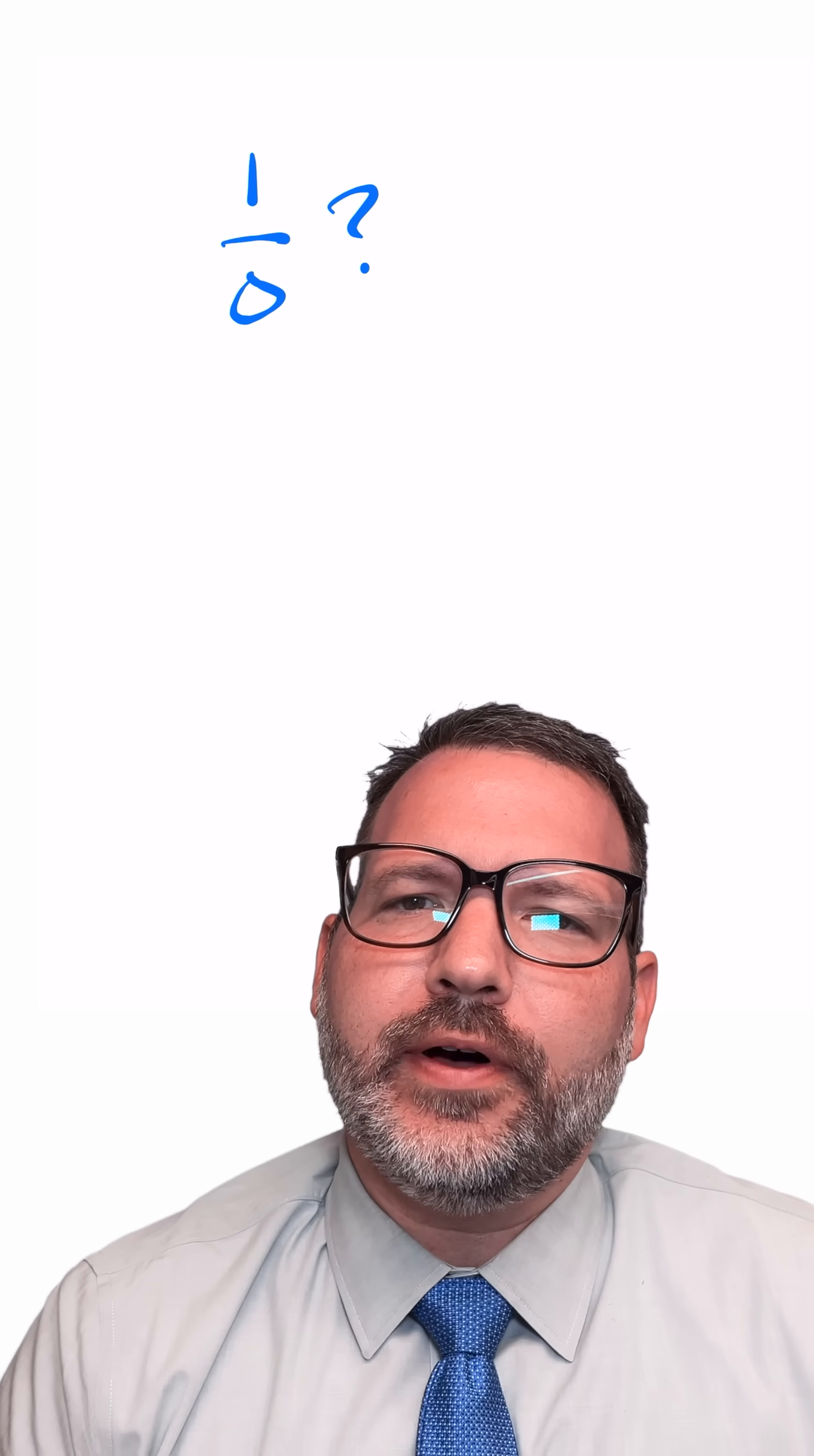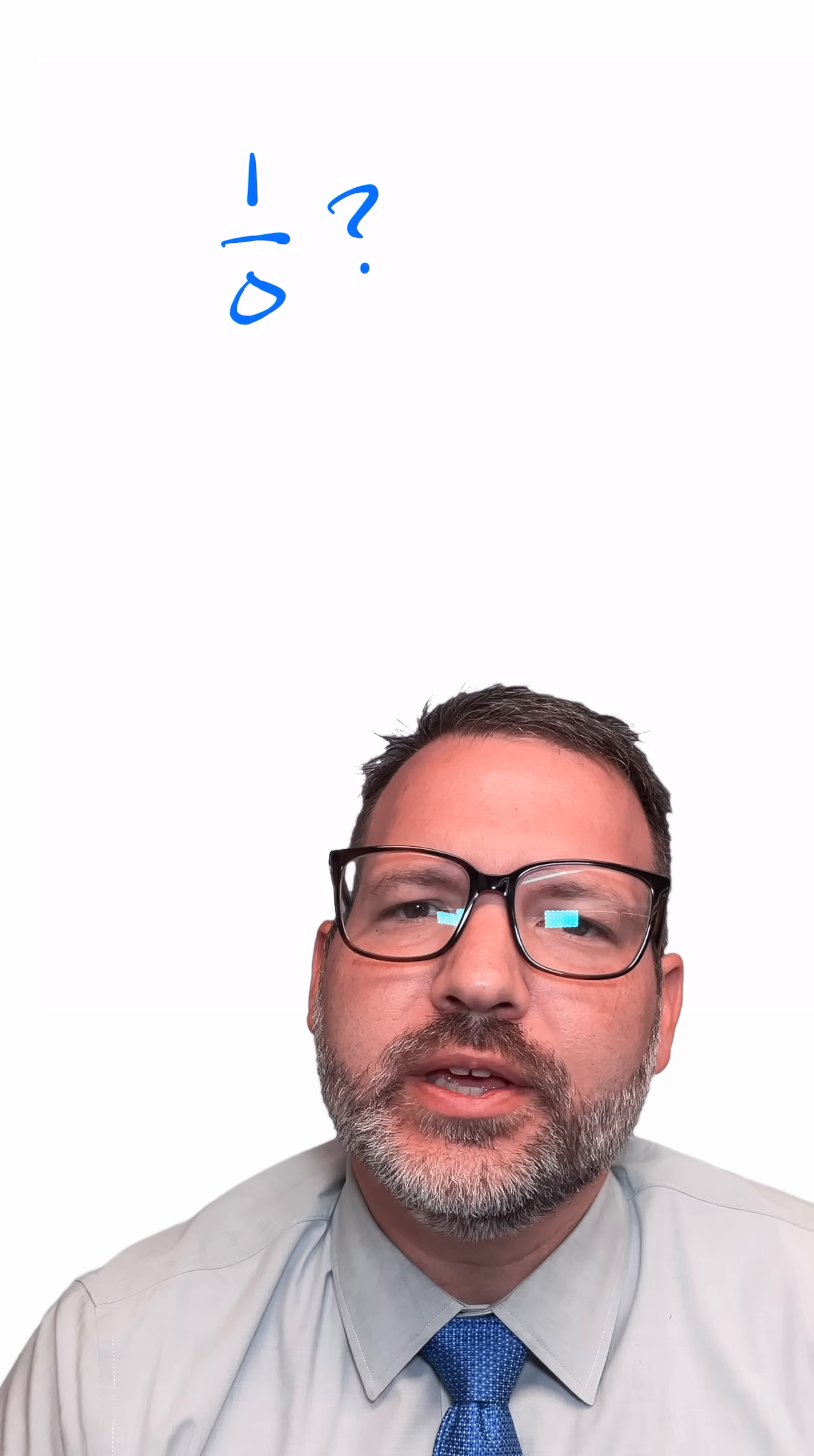What does it mean to divide a number by zero? Take something like 1 divided by zero. How could we assign a value to this number?